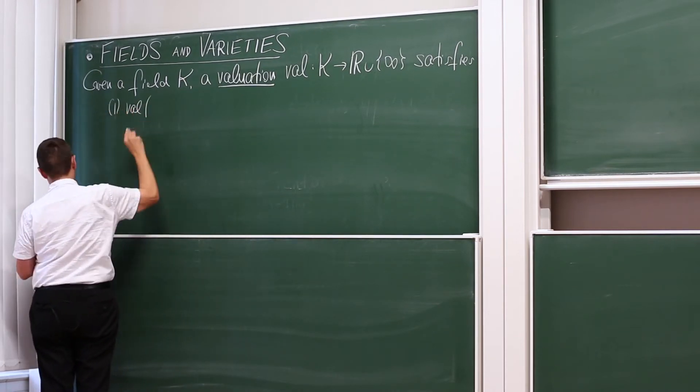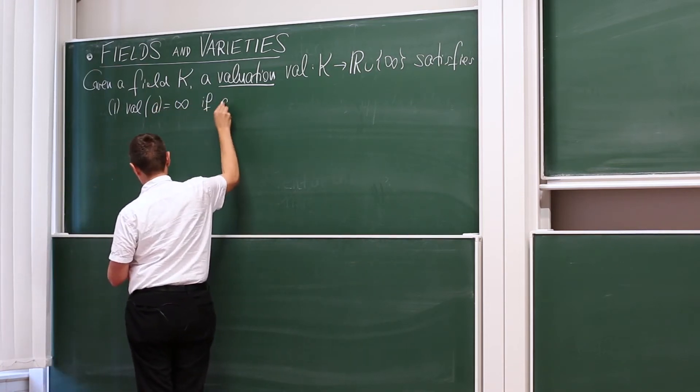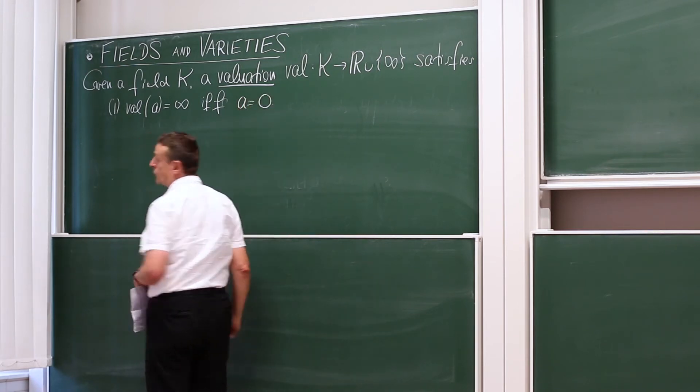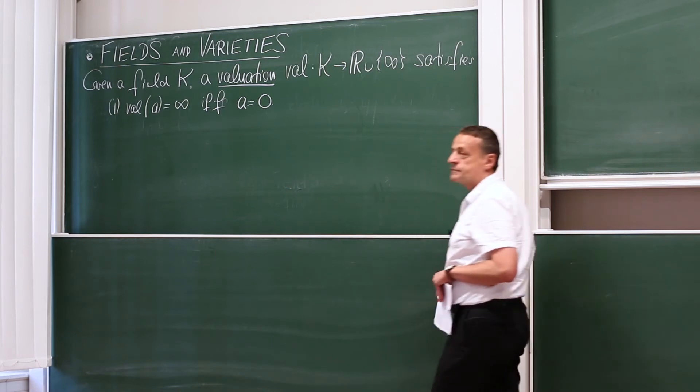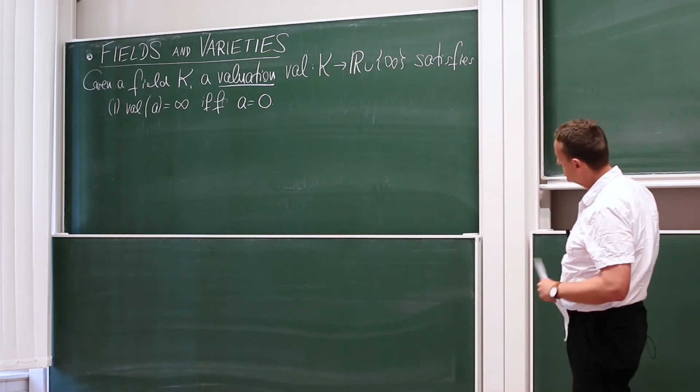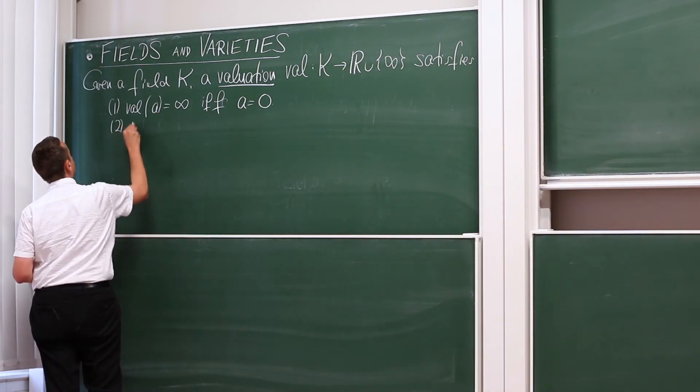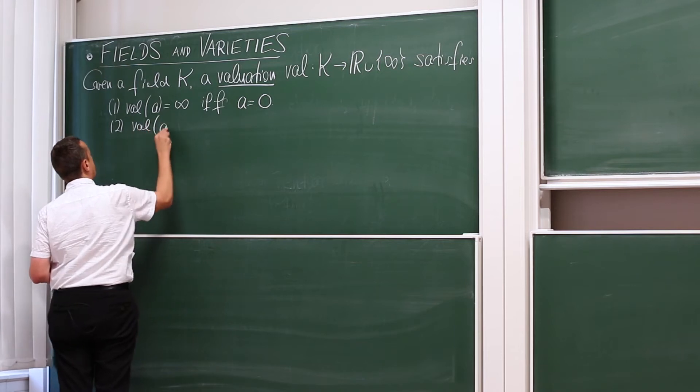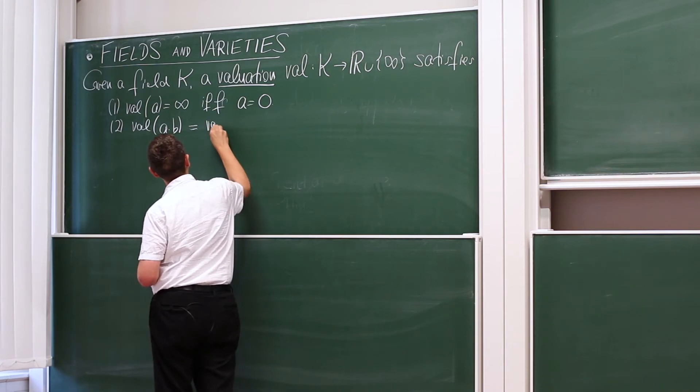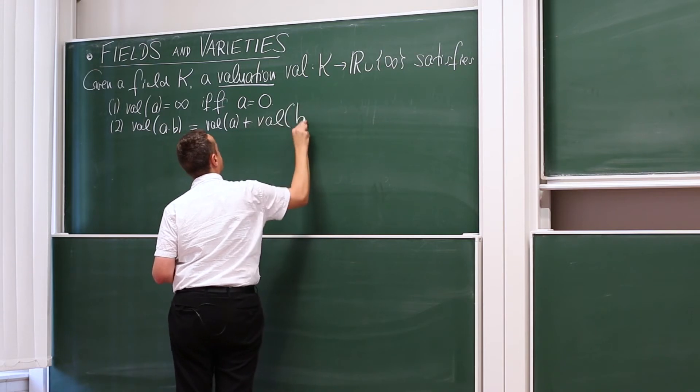First, the valuation of a field element A is infinity if and only if A is 0. So the 0 element, additively neutral element has valuation infinity. Every other element has a valuation that is a real number. Second, it's a homomorphism with respect to multiplication in the field. So the valuation of A times B is the valuation of A plus the valuation of B.